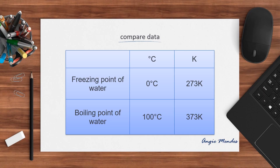Here are some tips that we need to keep in mind. What is the freezing point of water in degree Celsius and in Kelvin? Water freezes at 0 degree Celsius or at 273 Kelvin, and water boils at 100 degree Celsius or 373 Kelvin.